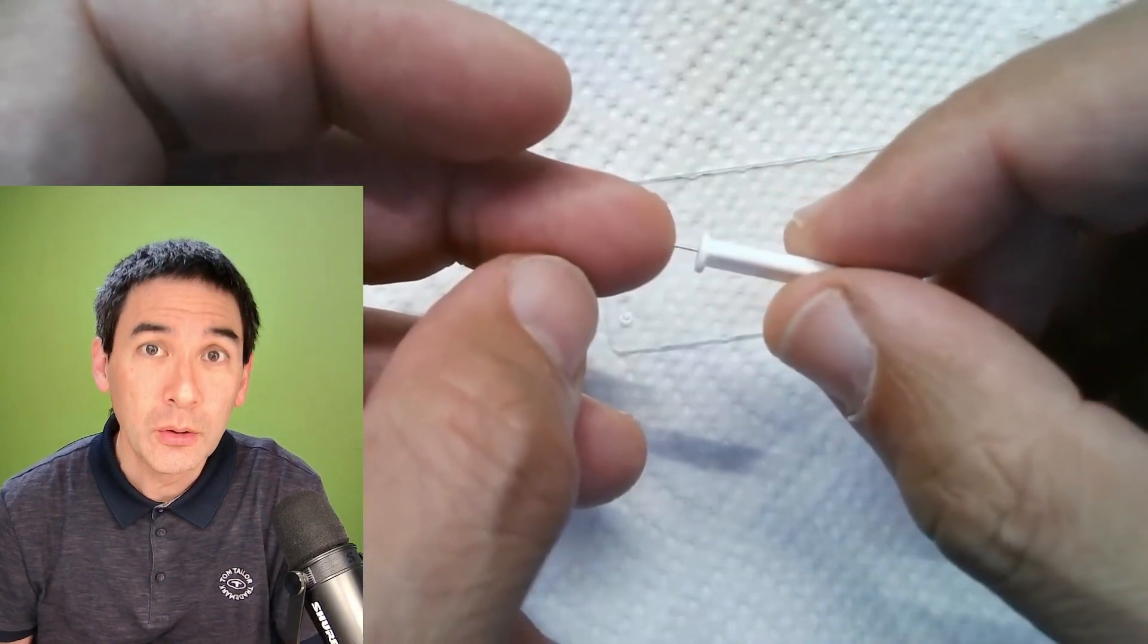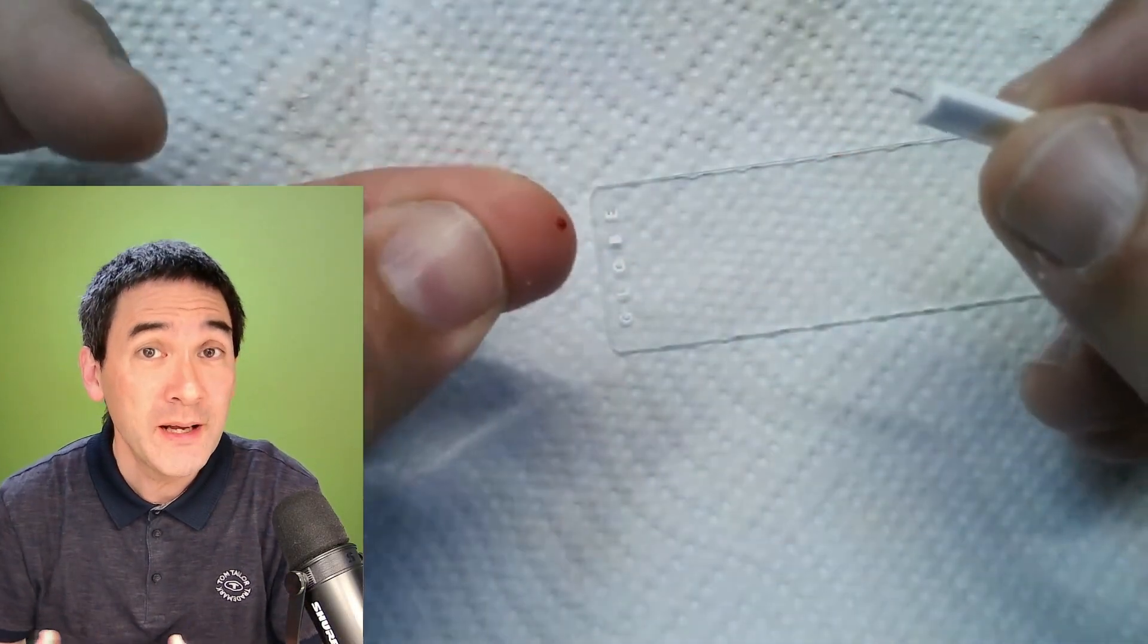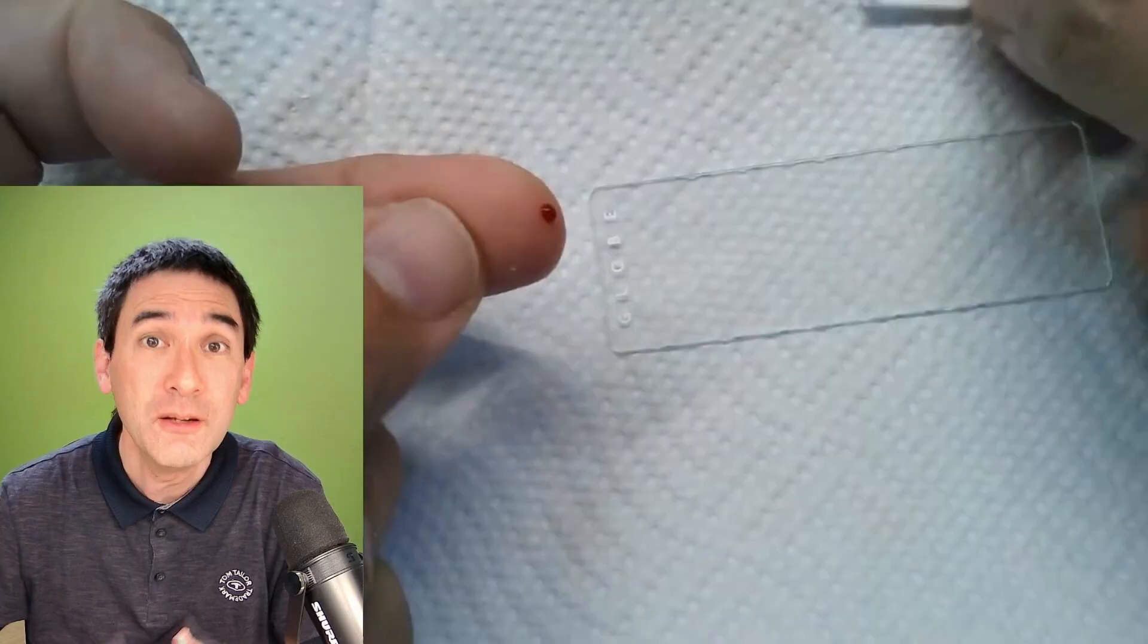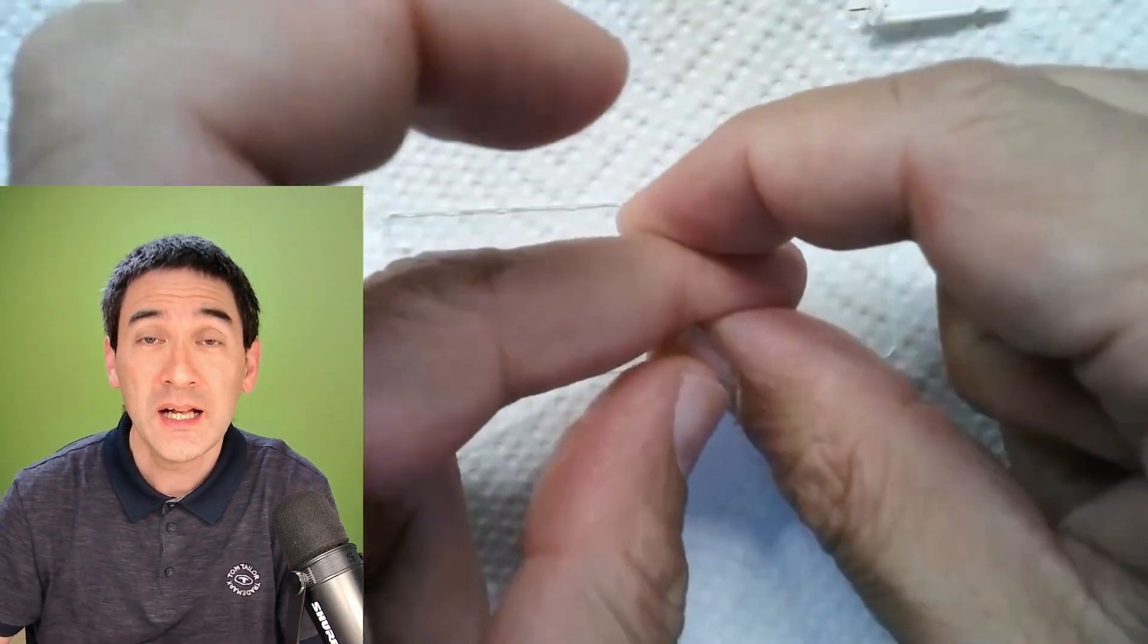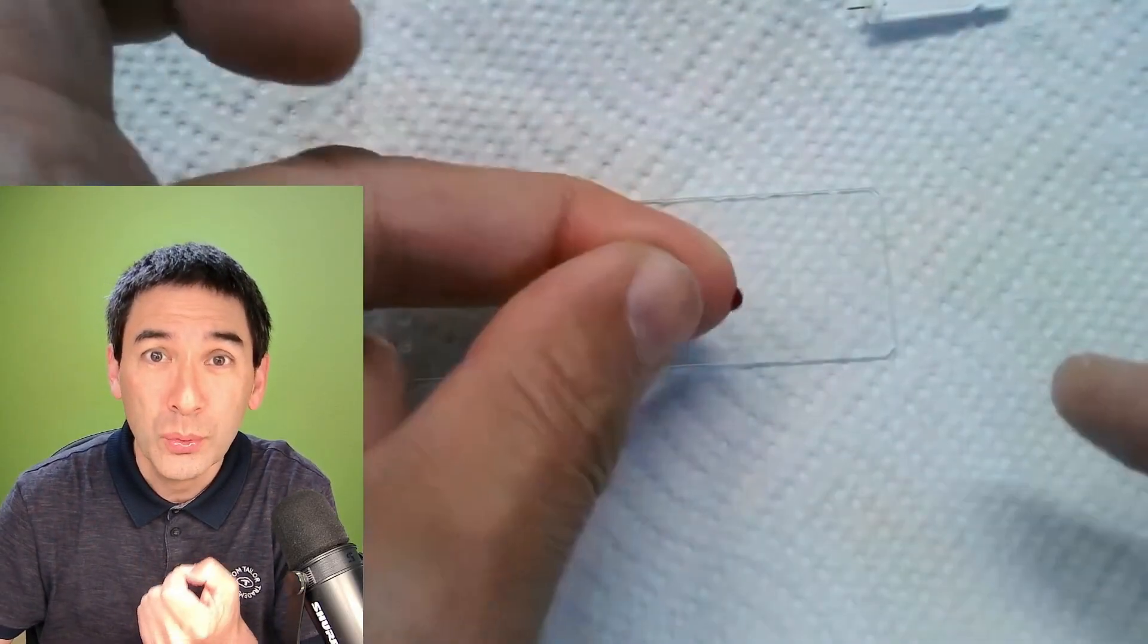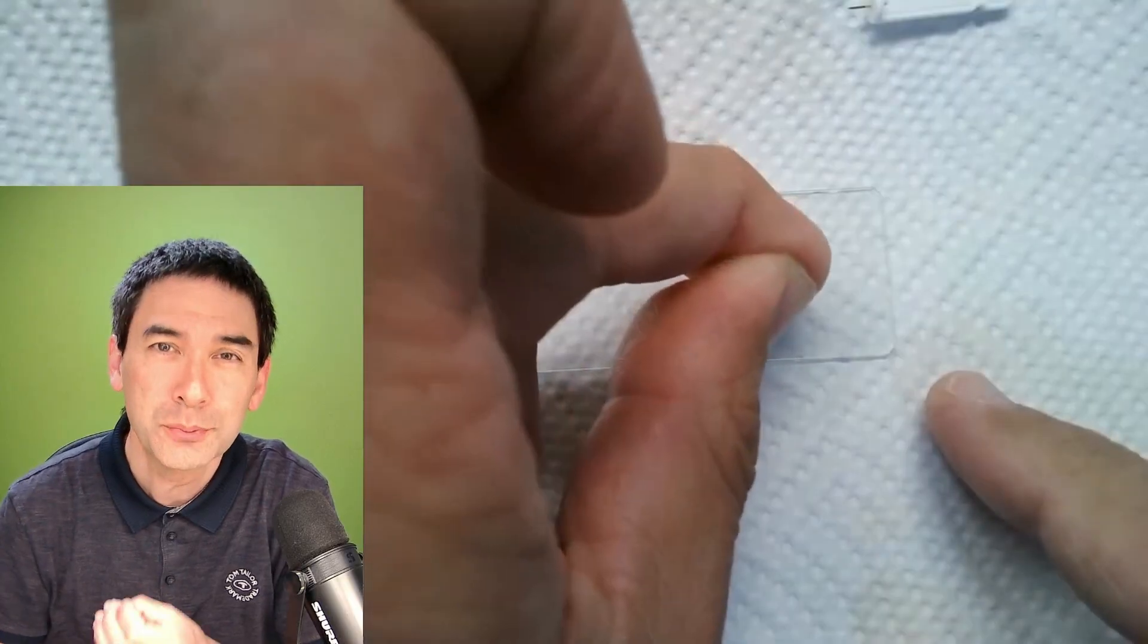You only need a very small drop of blood. As a matter of fact, too much blood makes it difficult to see the individual blood cells, and because the wound, the hole is so small, I really have to press a little bit to squeeze out a small amount of blood.